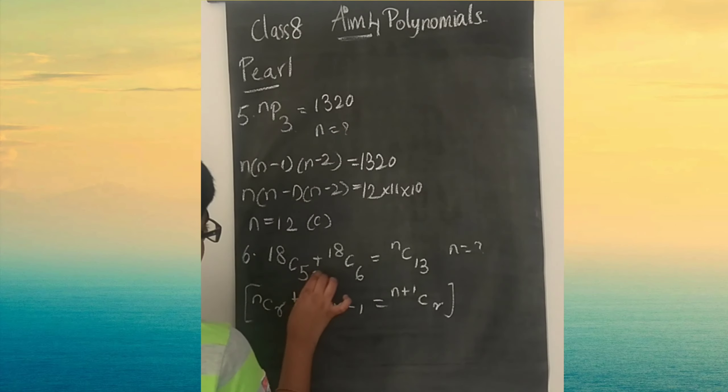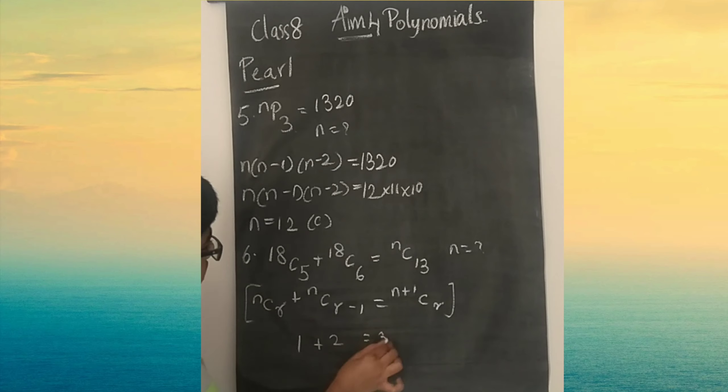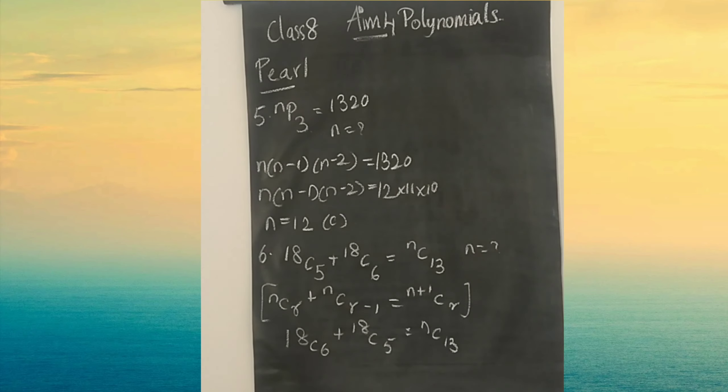When you put it at this side it's the same. For example, 1 plus 2 equals 3, and 2 plus 1 equals 3. No change, only the digits are moved but answer is same. So we will be moving this here and that one there. Now it is in the form of this formula correctly.